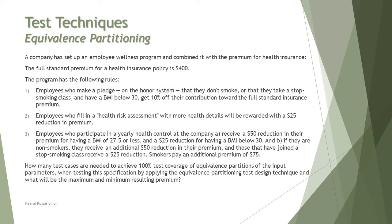Employees who participate in the yearly health control at the company receive a $50 reduction in their premium for having a BMI of 27.5 or less, and a $25 reduction for BMI below 30. Note that the previous rule also mentions BMI below 30 with 10% off, but that one involves making a pledge — here it is about the yearly health control. For the smoking category: non-smokers receive an additional $50 reduction, those who have joined a stop-smoking class receive a $25 reduction, and smokers pay an additional premium of $75.